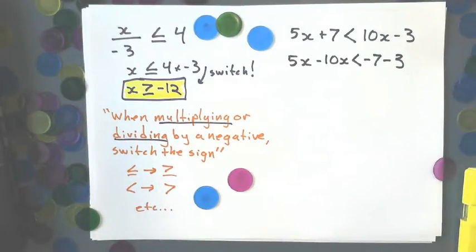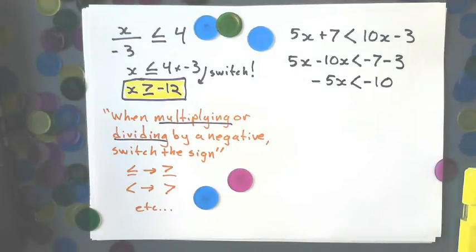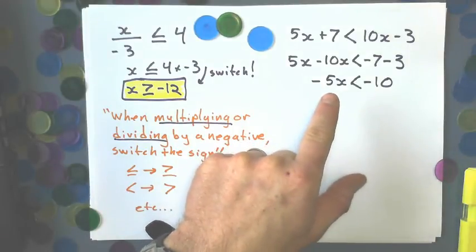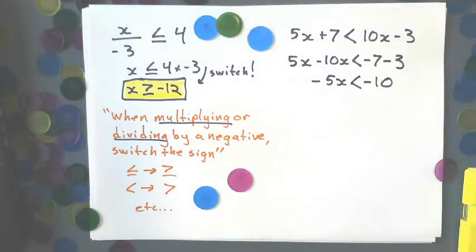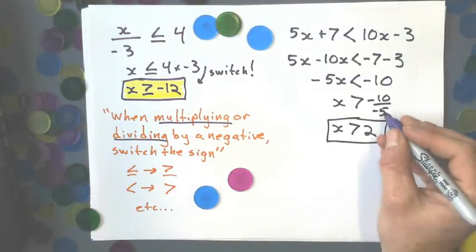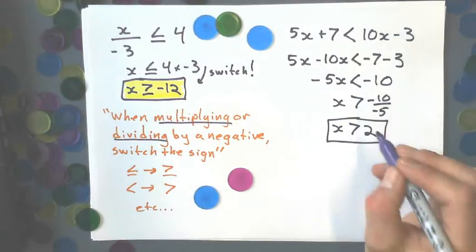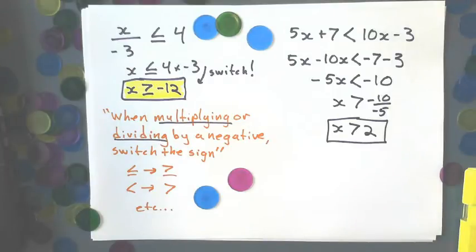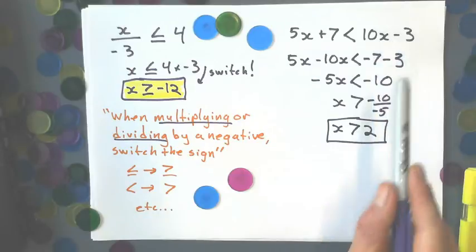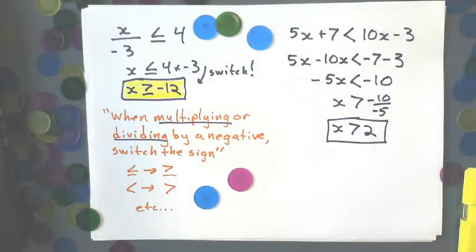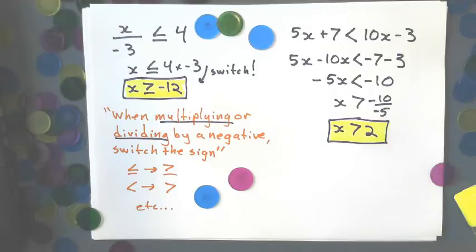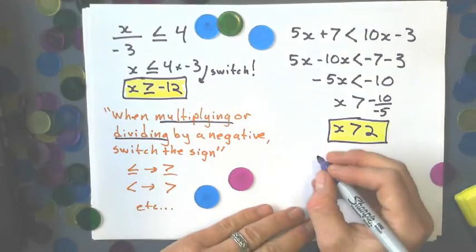I collect like terms here, clean that up. And right now, I know my sign's going to switch because I'm going to be dividing by a -5. Okay, and so since I divided by that -5, my sign switches direction to a greater than. X is, what makes this inequation true is all values greater than 2.